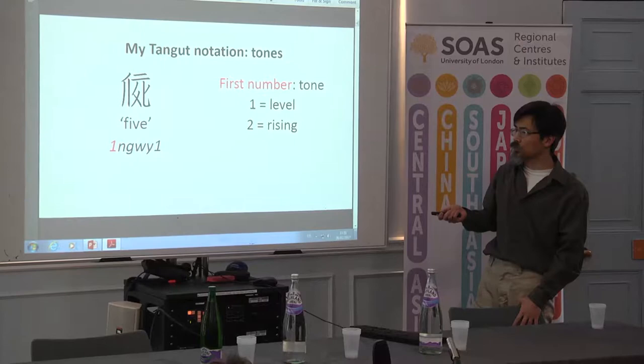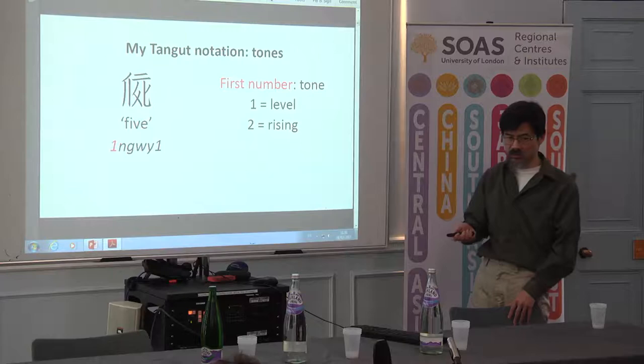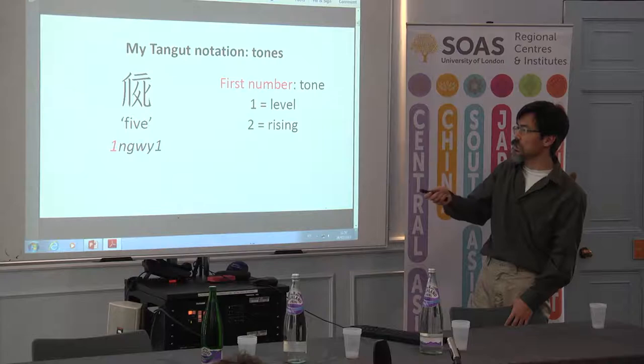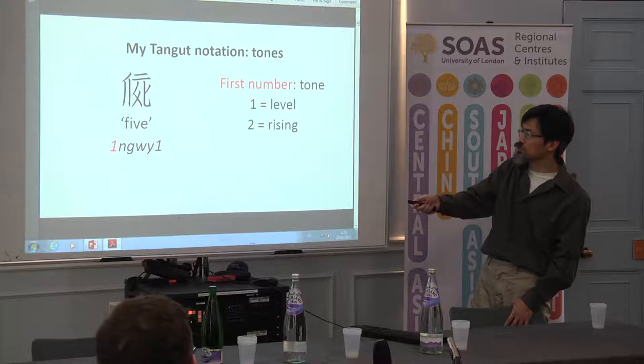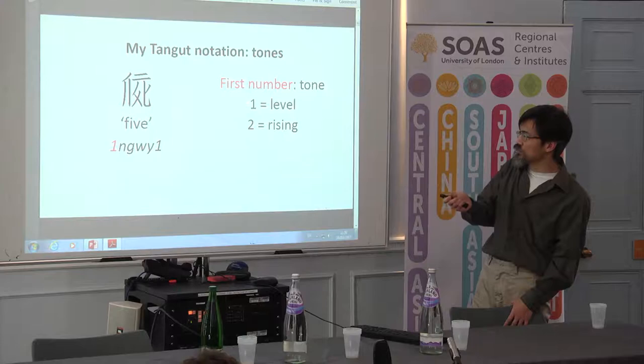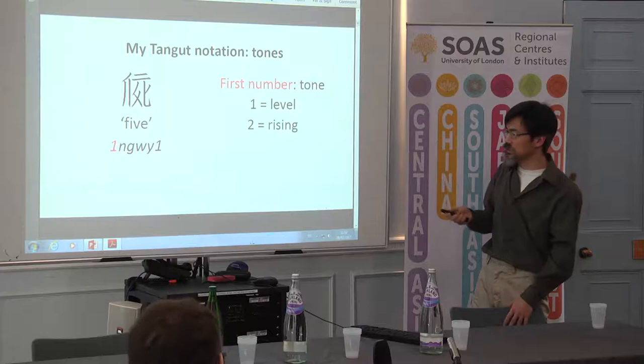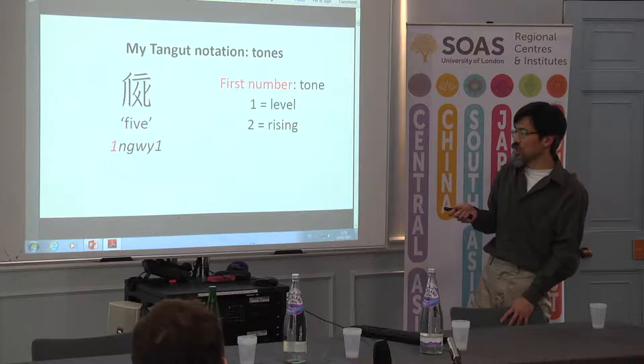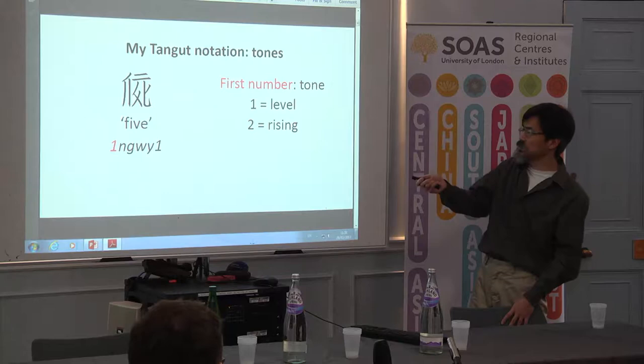My system incorporates some aspects influenced by Professor Nishida's system. One of those aspects is that I mark Tangut tones using numerals at the beginning of the syllable. So the first number in the Tangut forms in this presentation indicates tone, and there are two possible tones, one and two, which are conventionally called level and rising — those are the Tangut names for the tones — though whether those are the actual forms of the tones is uncertain, as these names have become highly conventionalized in the Chinese tradition.